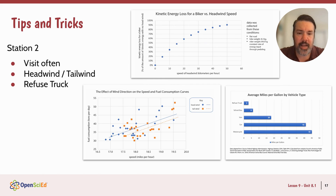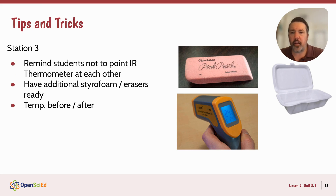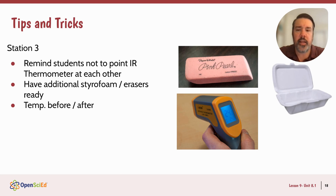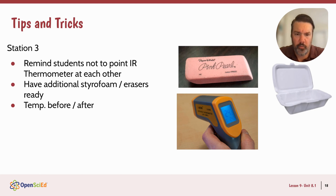Every station has a handout with directions to help students when they get there. For station three, students rub an eraser on the table and also rub styrofoam together and measure the temperature before and after. Make sure you have extra styrofoam and erasers ready. Remind kids not to point the thermometer at one another — it has a laser in it. Remind them to take the temperature before and after, because a lot of times students forget the before part and only take it after they've rubbed on the desk.